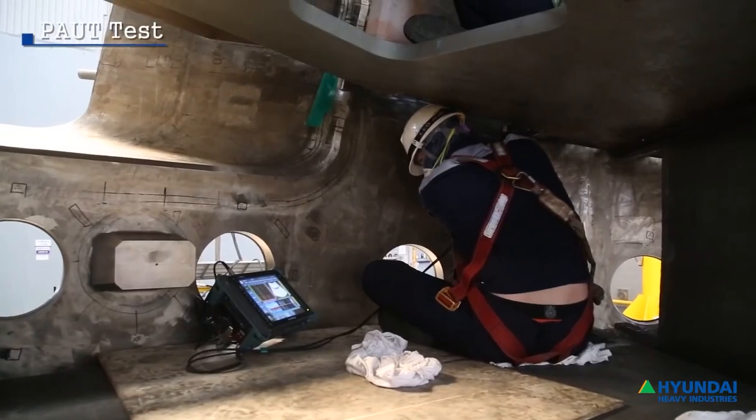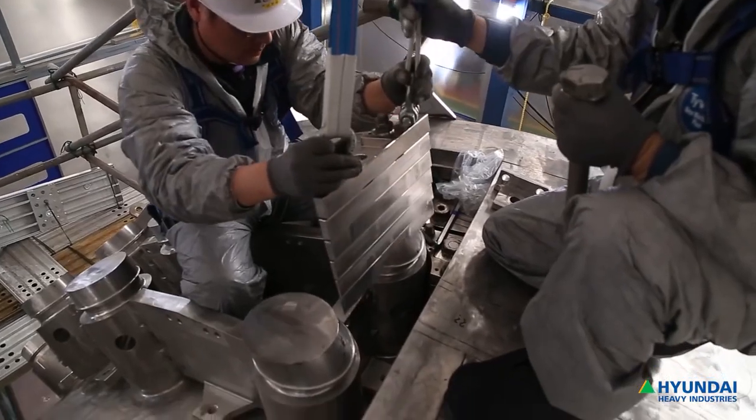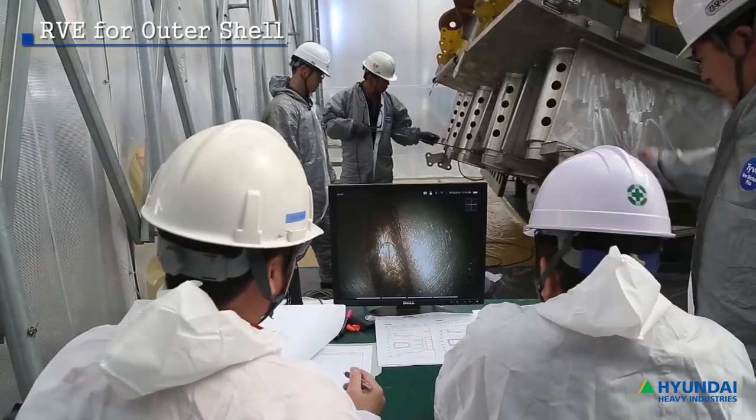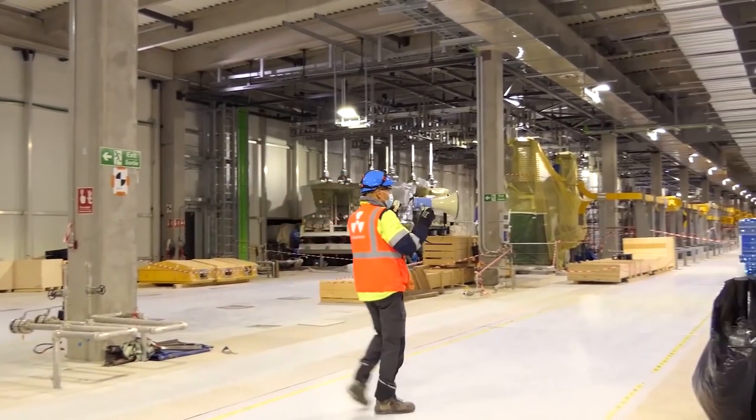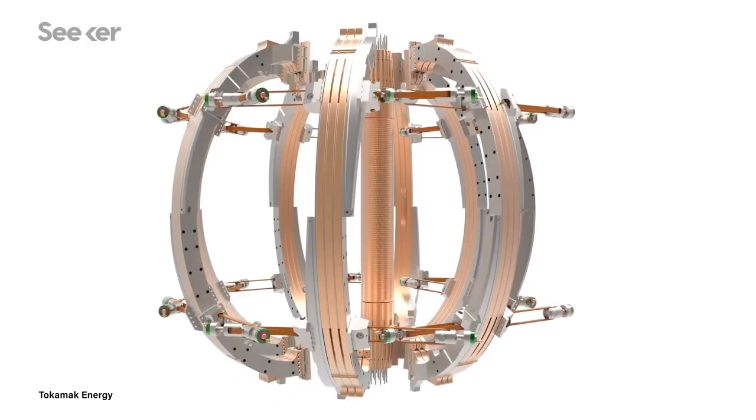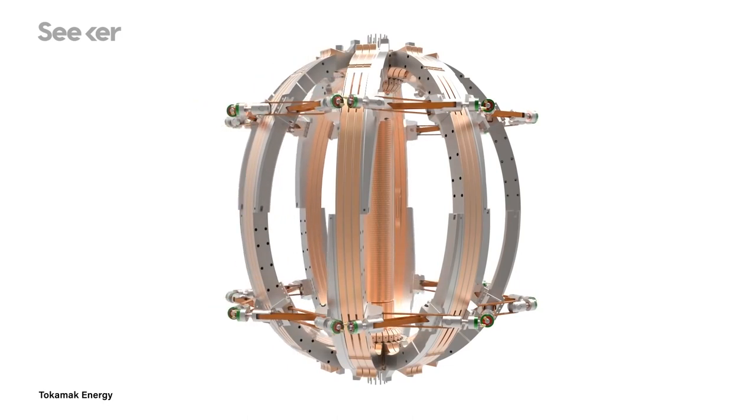The countries in charge of manufacturing the magnets vary. The ones making the toroidal field magnets range from China to St. Petersburg, Russia to the rest being made in Europe simply because they would be too large for travel. Half of the toroidal field magnets are made in Japan and the other half are made in Europe. Lastly, the six modules of the solenoid are made in the US.